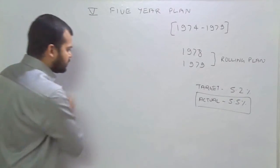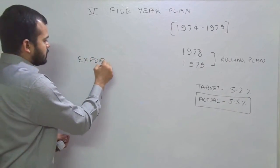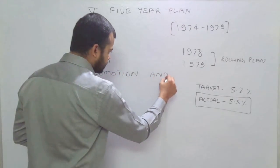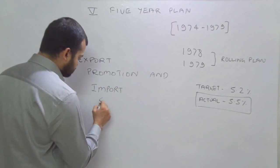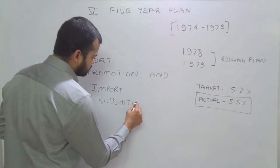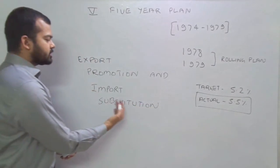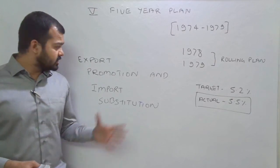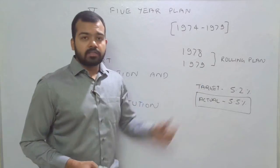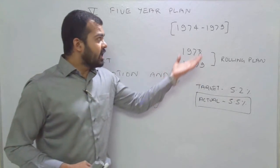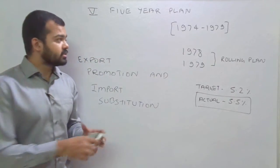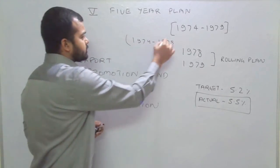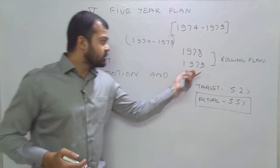Another major focus was export promotion and import substitution, which were also priorities of the policy makers and the Planning Commission. The planning period was discontinued in 1978, and the period from 1974 to 1978 is known as the 'stunted period.' The remaining 2 years, 1978 to 1979, are known as the rolling plan period.